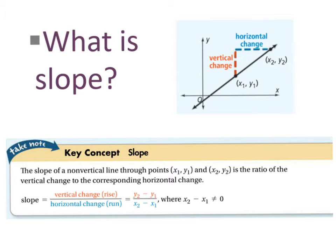In order to calculate the slope, we use the ratio of the rise to the run, which we could rewrite as an equation: y2 minus y1 over x2 minus x1.